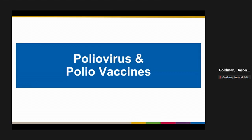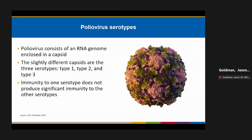Polio virus consists of an RNA genome enclosed in a capsid, and there are slightly different capsids that give rise to three different serotypes: type 1, type 2, and type 3. Immunity to one of those serotypes doesn't produce significant immunity to the other serotypes.